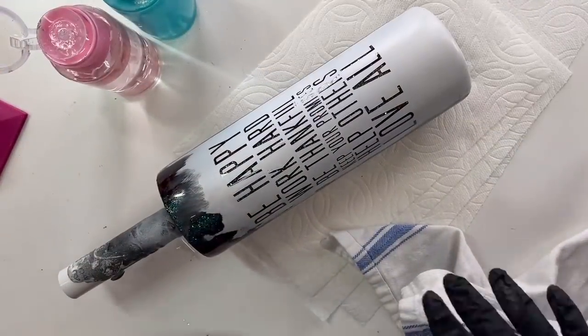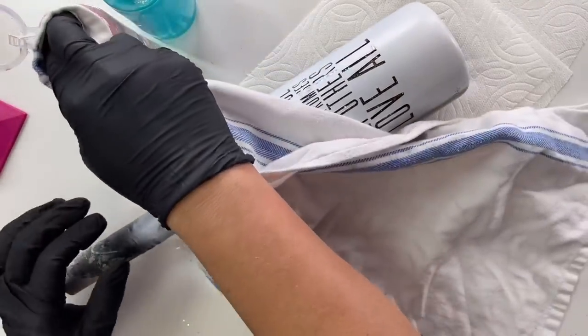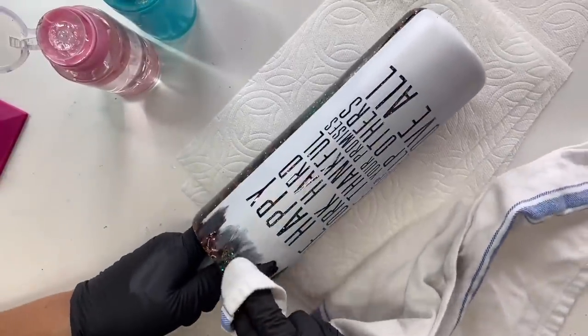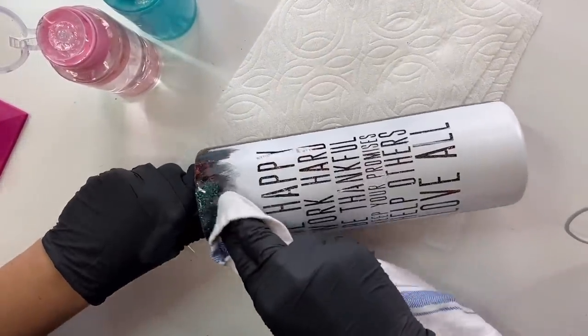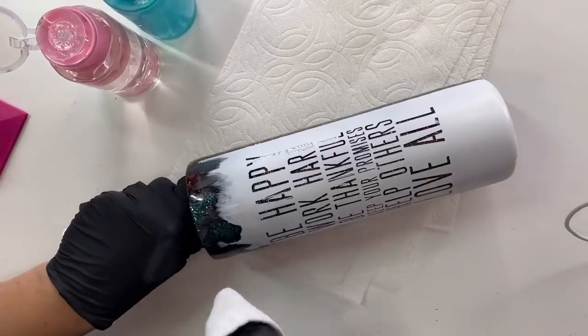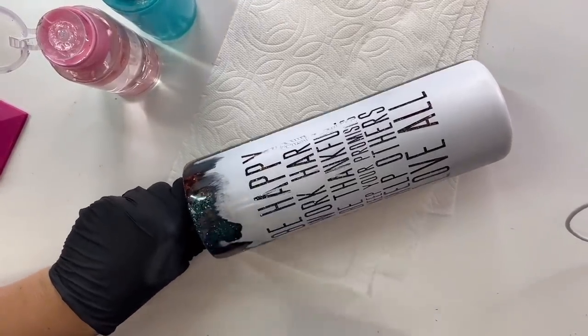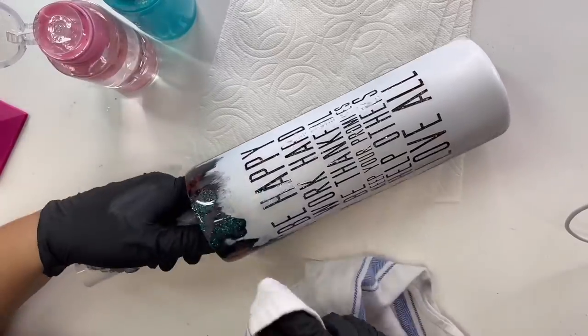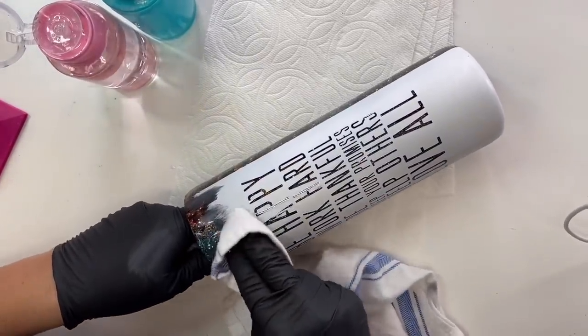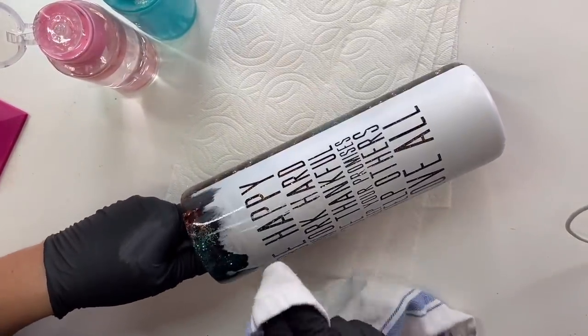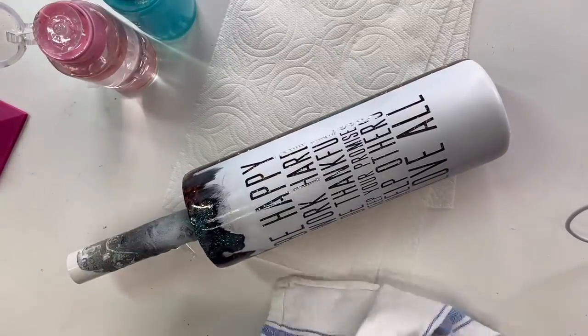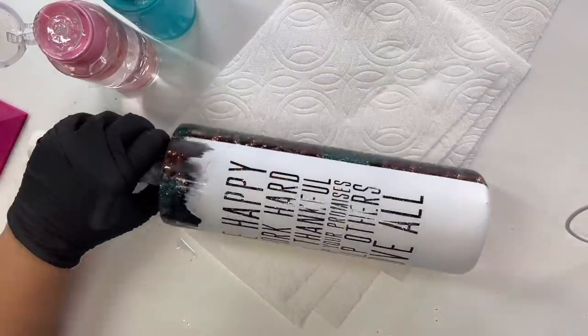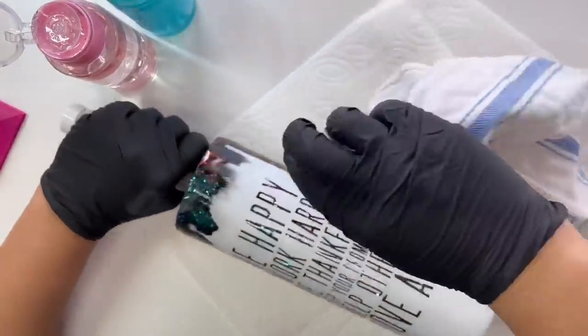I've got some acetone here in the blue container and some 91% rubbing alcohol in the pink container. So for best results, definitely use 91% alcohol, not 99% or 70%. And for acetone, use the one from the hardware store. Or if you can find absolute 100% acetone from your beauty supply or nail section of the store, that's fine too. We just want the good stuff.